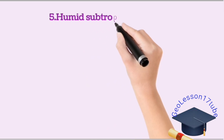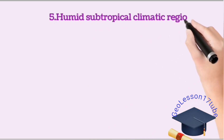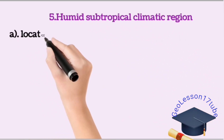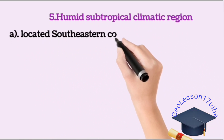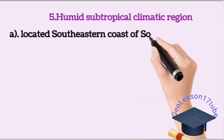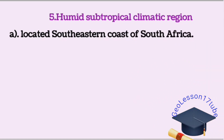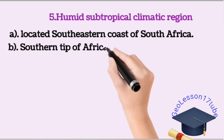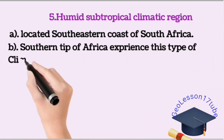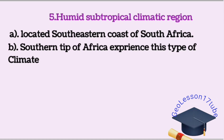The humid subtropical climatic region is located on the southeastern coast of South Africa. The southern tip of Africa experiences this type of climate, characterized by warm, humid summers and mild, drier winters.